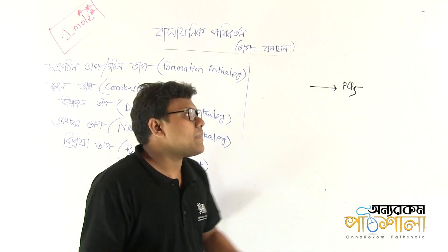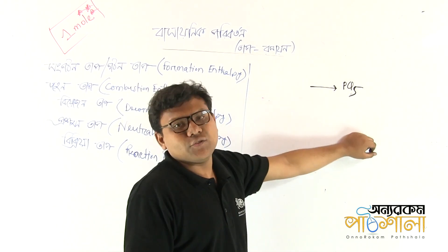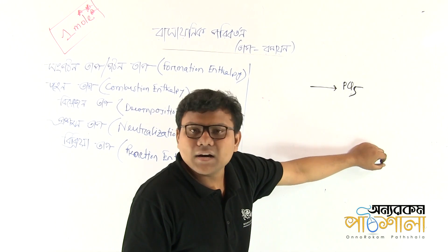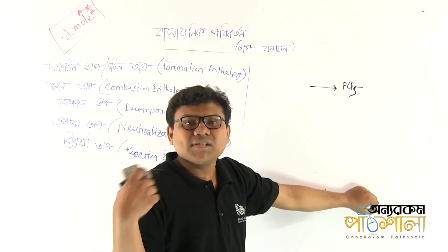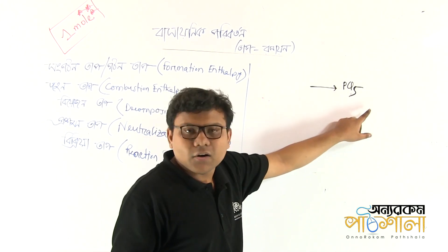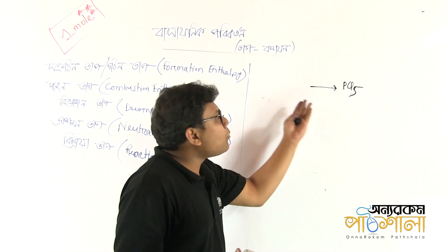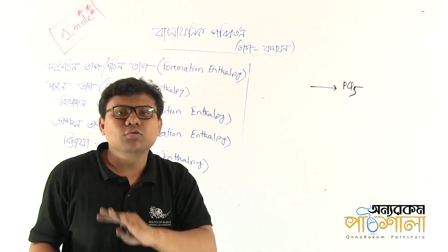What does PCl5 mean? It is a compound of phosphorous and chlorine, so PCl5 is a constituent mole of phosphorous and chlorine. It is pure phosphorus or pure chlorine.